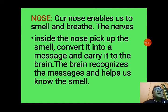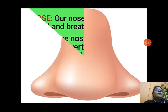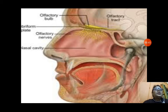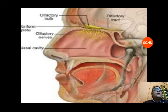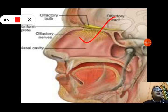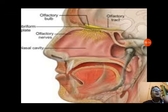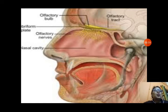Without the brain we cannot smell. You can see the nose and its internal structure. Olfactory nerves are present in the nose. These olfactory nerves carry the messages of the sense to the brain, and the brain understands the smell. It enables us to smell the things which enter our nose.